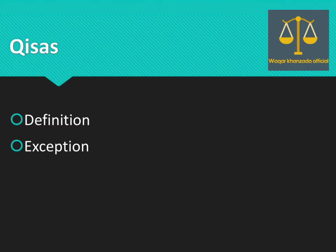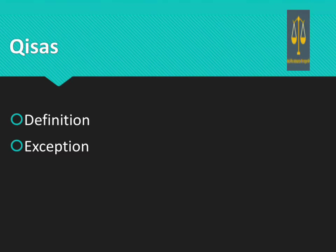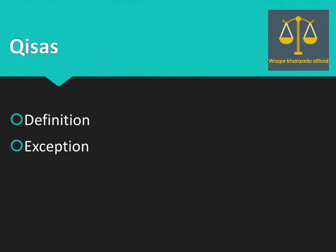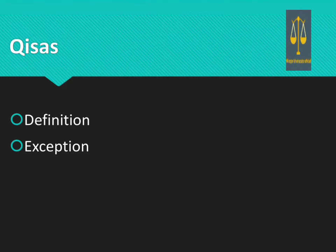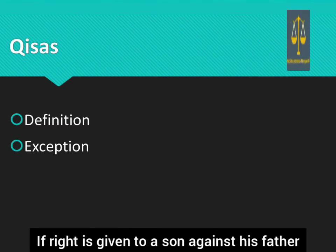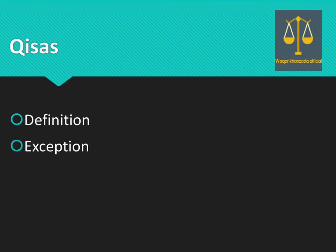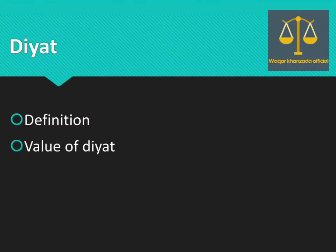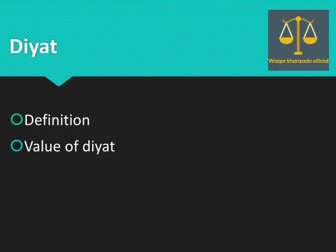The last exception is that the Wali has no right of Kisaas in cases where the person cannot enforce Kisaas against his father. For example, if a son has been given this right and he has to enforce it against his father, then he cannot exercise that right. The second kind of punishment is Diyat.